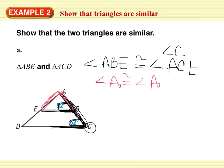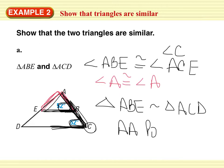We have two angles that are congruent. So now we can say that triangle ABE is similar to ACD because of the angle angle postulate.